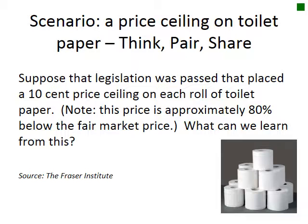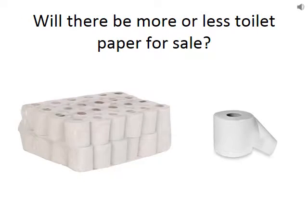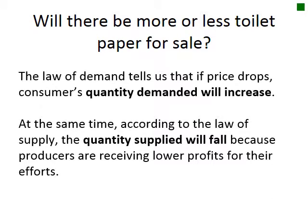Here's a rather ridiculous example to illustrate what happens with a price ceiling. Suppose legislation was passed placing a 10-cent price ceiling on each roll of toilet paper — approximately 80% below the fair market price. The law of demand tells us consumers' quantity demanded will increase at this lower price. But according to the law of supply, quantity supplied will fall because producers are receiving lower profits. As we saw in the diagram, we'll then have a shortage.